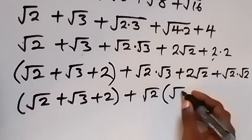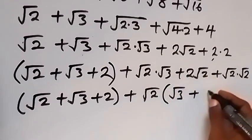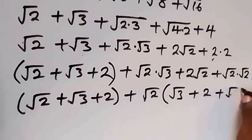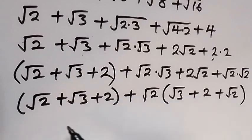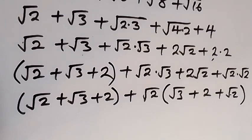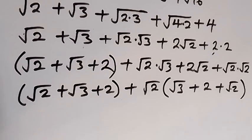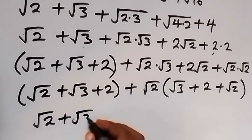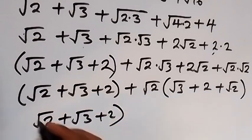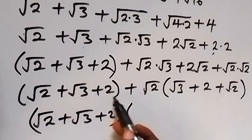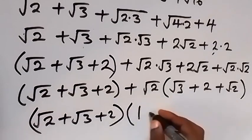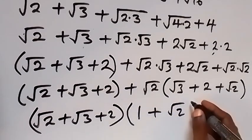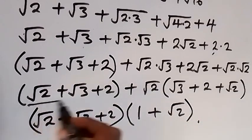We see that the brackets contain the same expression. When we look closely, both groups share the factor root 2 plus root 3 plus 2, so we factor that out. What is left is 1 plus root 2. So the denominator simplifies to bracket root 2 plus root 3 plus 2, times bracket 1 plus root 2.